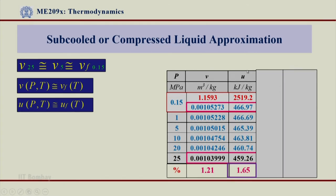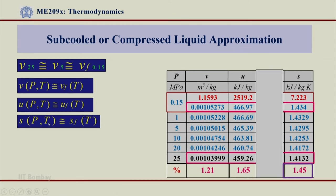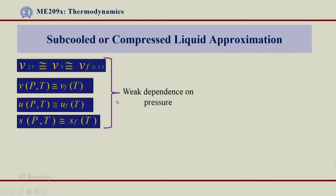Similarly, looking at other properties: for thermal energy U, the percentage change hardly matters, so U(P,T) is approximately equal to UF(T). At higher and higher pressures, this property is the same as it was on the saturation pressure line — on the LV line. For entropy S as well, since the variation is negligible, S(P,T) in the subcooled or compressed liquid region does not depend on pressure and is approximately equal to SF(T). So V, U, and S all have weak dependence on pressure.